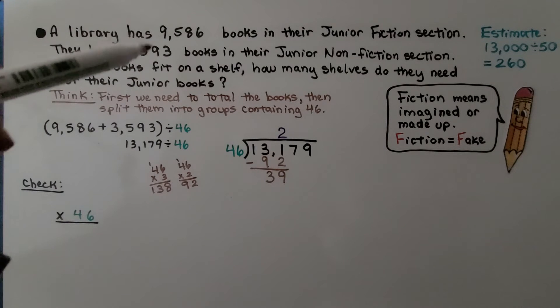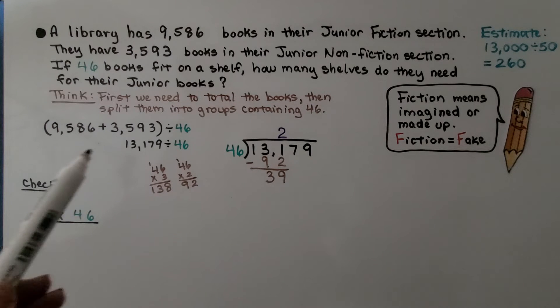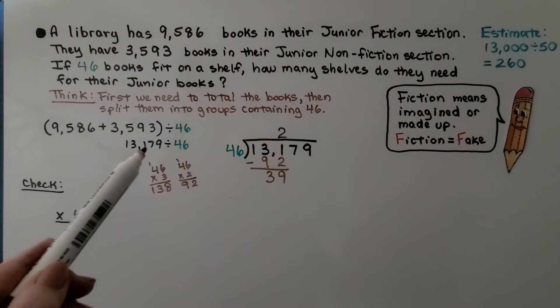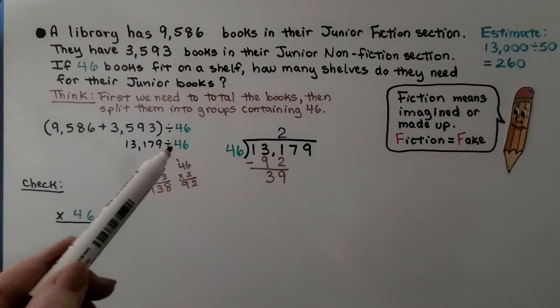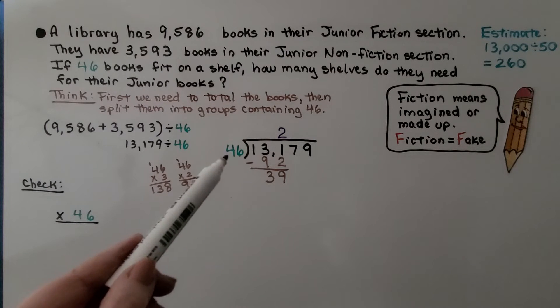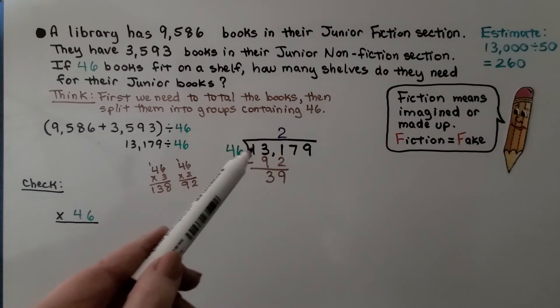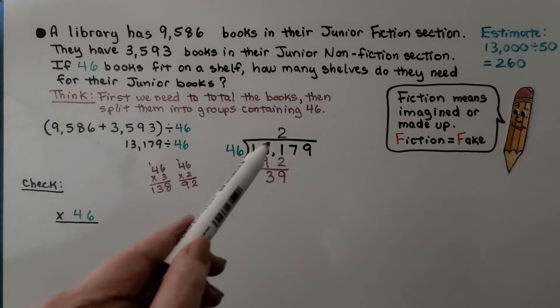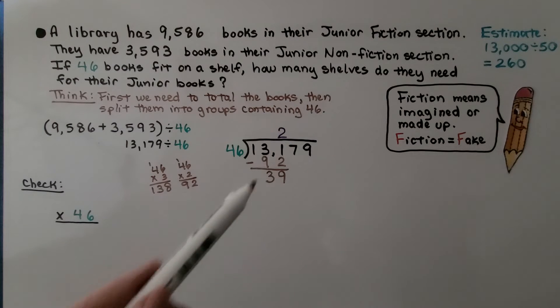First, we need to total the books and then split them into groups containing 46. We need to total the two amounts, fiction and non-fiction. We add them and get 13,179. And if 46 books fit on a shelf, we're going to divide it by 46. So 46 can't fit into 1. It can't fit into 13. But it can fit into 131 two times.